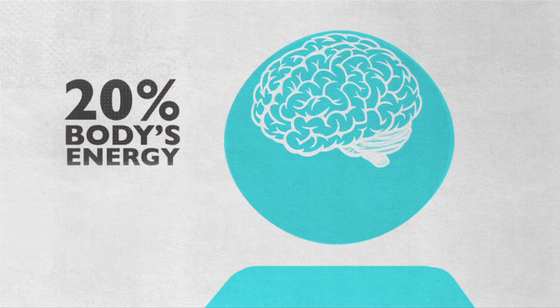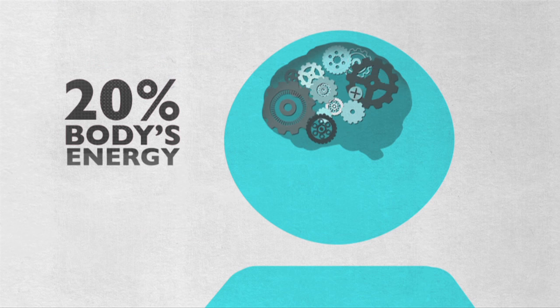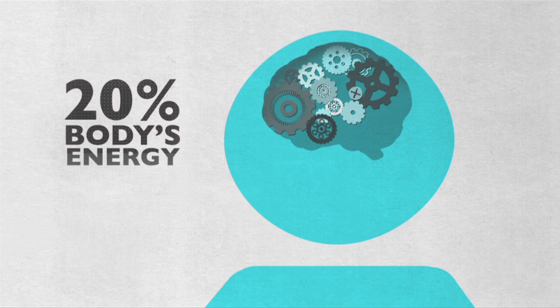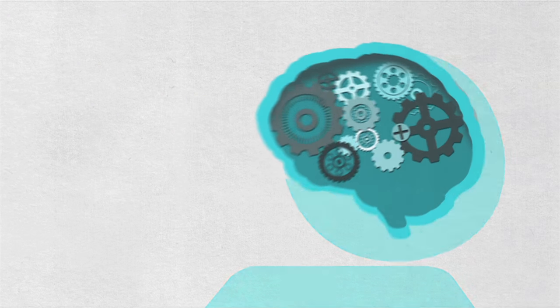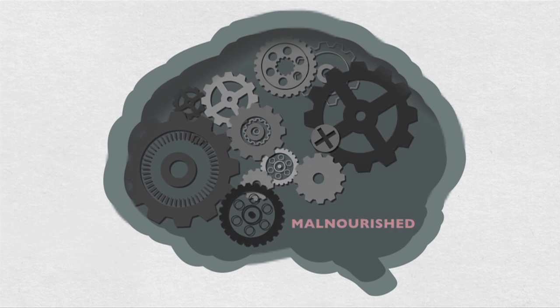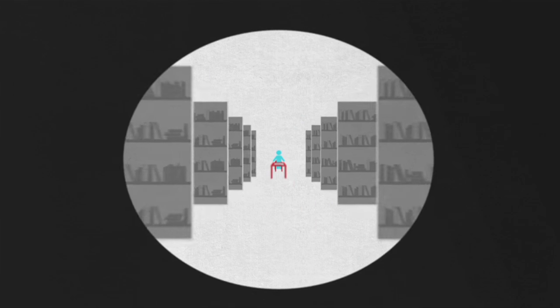For instance, a healthy brain uses 20% of the body's energy, and that energy comes from, you guessed it, food. When a child is hungry, the brain is starved. The result? Malnourished kids fall behind in school because they can't concentrate.